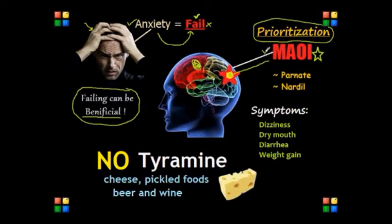MAOIs help balance certain brain chemicals — what we call neurotransmitters — by reducing the amount of monoamine oxidase, which is the substance that breaks down those neurotransmitters. As a result, there are more neurotransmitters in the brain, which helps decrease symptoms of depression.